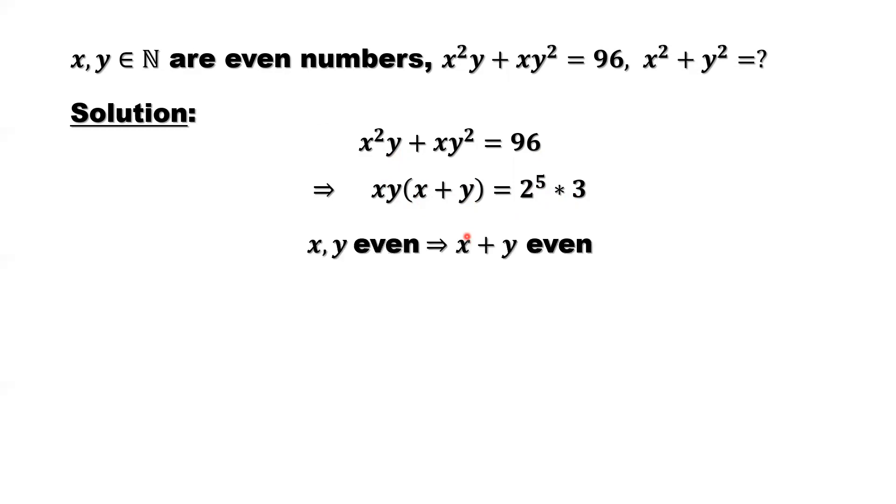From given condition, x and y are even numbers. This implies x plus y is also an even number. 96 can be rewritten as a product of three numbers x, y, x plus y. By symmetry, we assume x less than or equal to y less than x plus y.